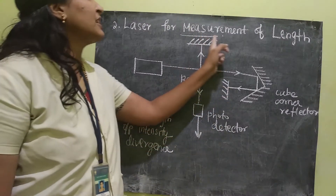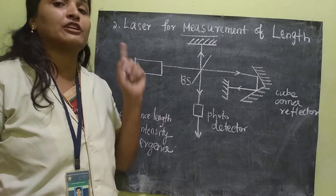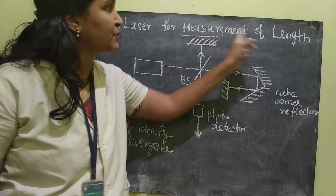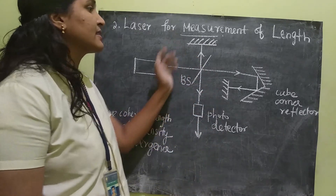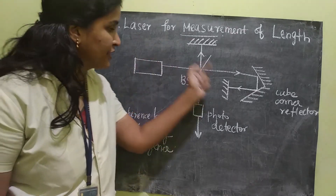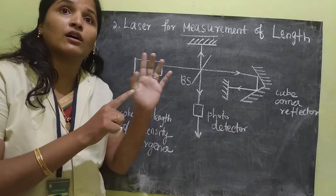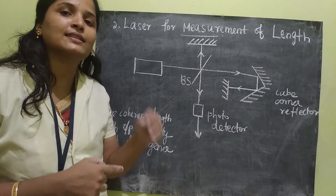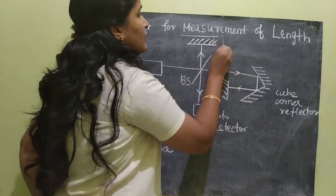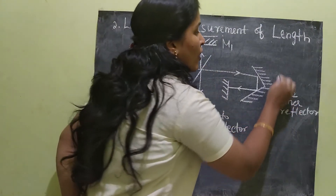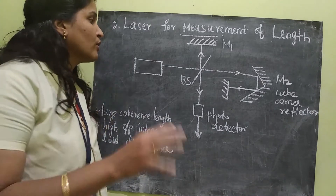The second measurement topic is measurement of length. The difference from the previous case is that this setup can measure precise length very accurately. In this interferometer, one mirror is a normal plane mirror and the other mirror is a cube corner reflector — that is the only difference.